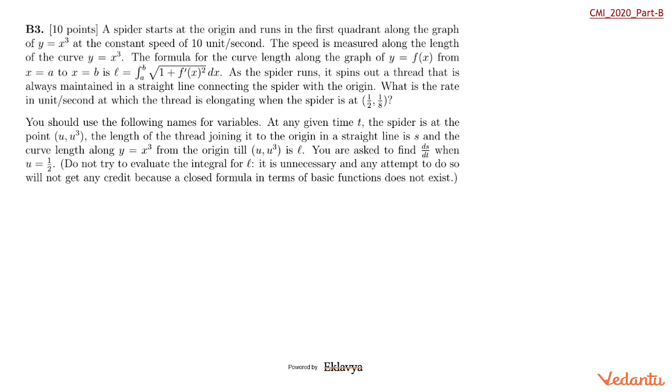As the spider runs, it spins out a thread that is always maintained in a straight line connecting the spider with the origin. The spider is connected by a thread, and we need to find the rate in units per second at which the thread is elongating when the spider is at one-half comma one by eight.